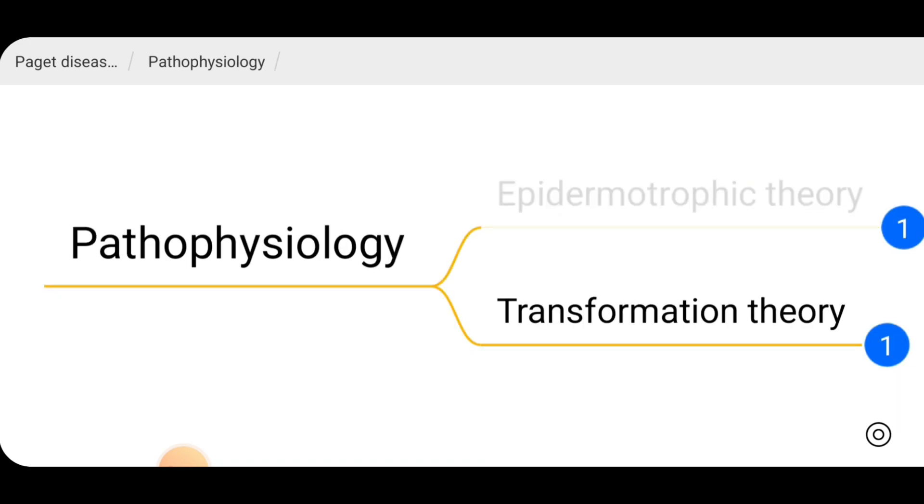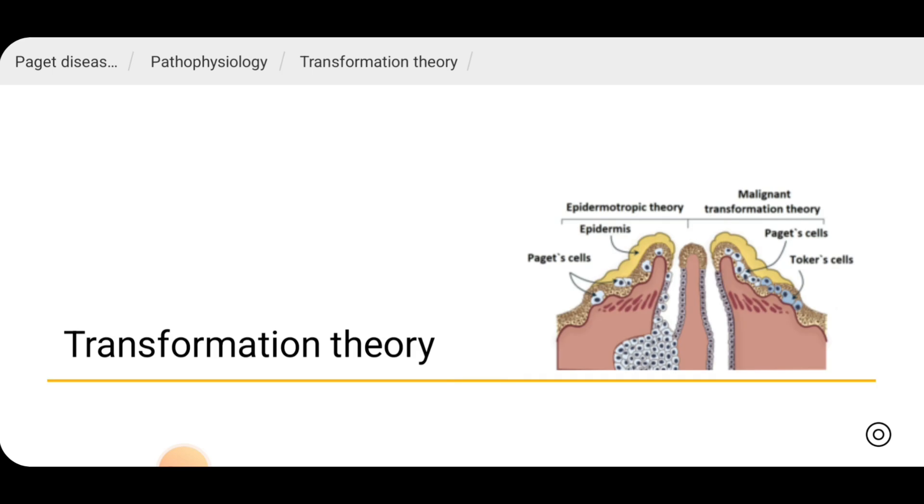The other theory is transformation theory. It says that the keratinocytes in the epidermis undergo malignant transformation and form Paget cells. What happens is the malignant cells are there in the epidermis around the nipple areolar complex.